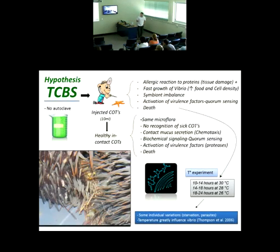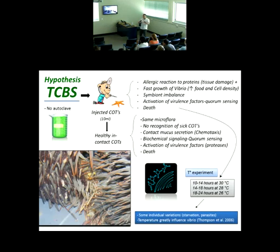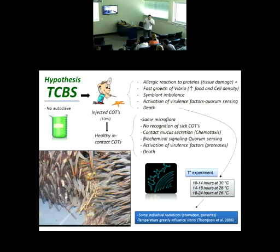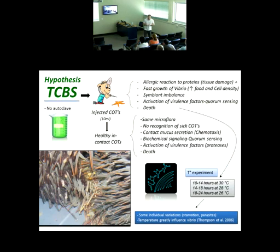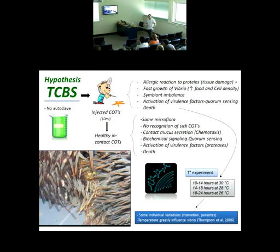Our hypothesis is that there is basically an allergic reaction to proteins causing tissue damage — for example, like a person allergic to peanuts who eats peanuts: inflammation, a lot of tissue damage. They really need an isolate to solve that problem, otherwise they just die.